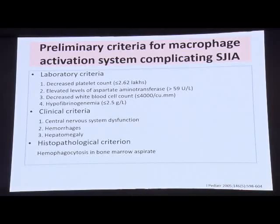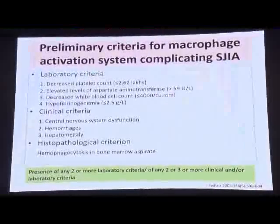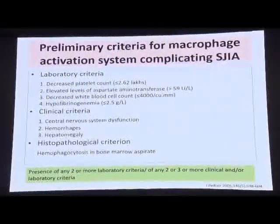Next came the preliminary criteria for macrophage activation syndrome, proposed by Angela Ravelli in 2005, published in the Journal of Pediatrics. Here, the laboratory criteria revised the platelet count threshold to 2.62 lakhs. The clinical criteria include system dysfunction and hemorrhages and hepatosplenomegaly. The pathological criterion is hemophagocytosis in the bone marrow aspirate.